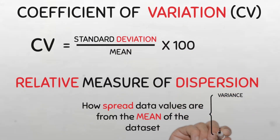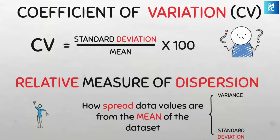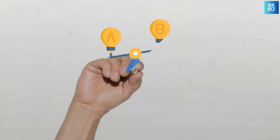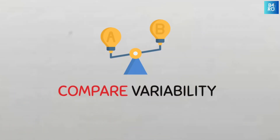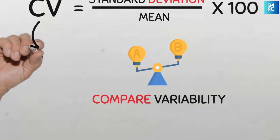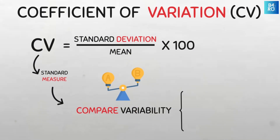Just like the variance and standard deviation, the coefficient of variation tells us how dispersed the data points are from the mean of the data. Coefficient of variation is important when you want to compare the variability of different data sets, and it is able to do this very well because as a measure, it expresses the standard deviation of any data set as a percentage of the mean. In so doing, it provides a standardized way to compare the dispersion of different data sets, even if they have different units or vastly different means.